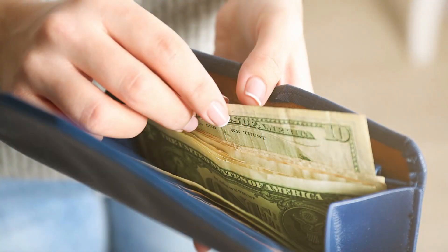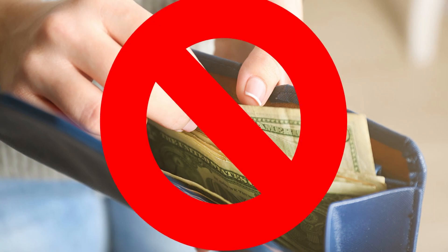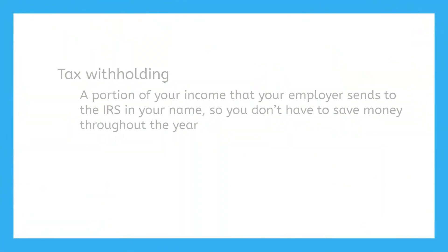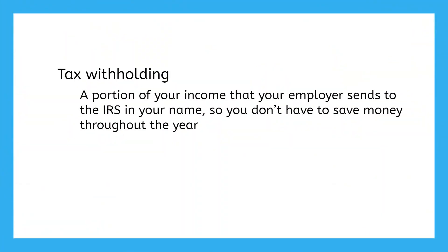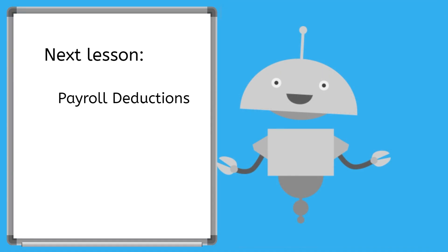But don't go pulling out your wallet just yet. Just because you've calculated your income tax liability doesn't mean that's how much you need to pay. Your employer may have withheld money from your paychecks to help you pay your taxes, so by the time tax filing season rolls around, most of your tax liability has probably already been paid through withholding. In the next lesson, you'll learn how payroll deductions work, including how withholding factors into how much you've already paid, how much you still owe, and how big of an unexpected refund you might get when you file your taxes. See you then!